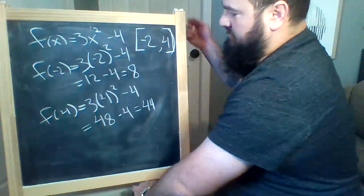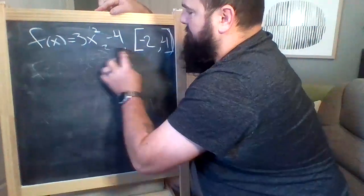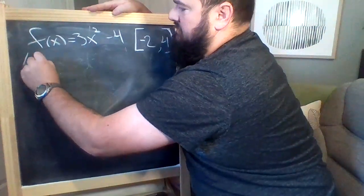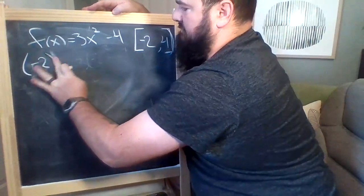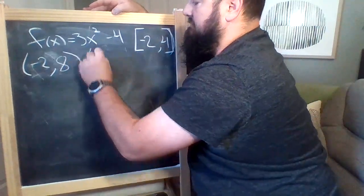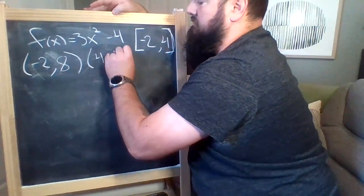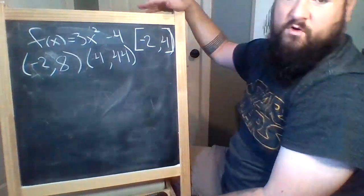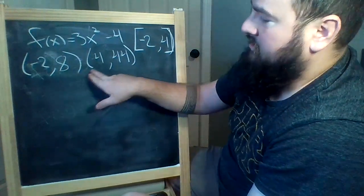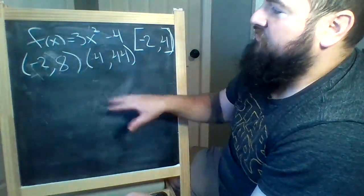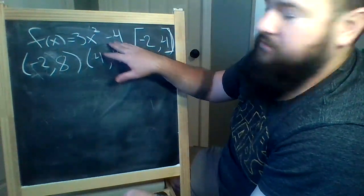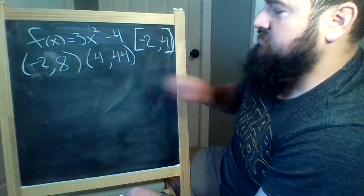So, keeping this in mind, we get 8 and 44. So this means we have the two points: (-2, 8) and (4, 44). This is our f(a), our b, f(b). So to find the average rate of change of f(x), which is equal to 3x² minus 4, from -2 to 4, I just have to find the slope between these two points.